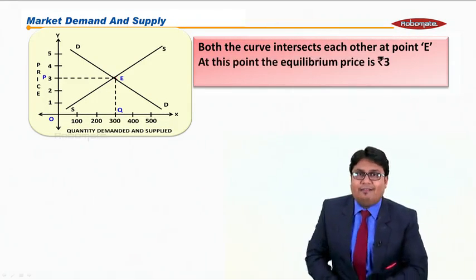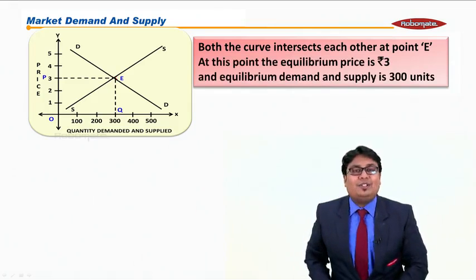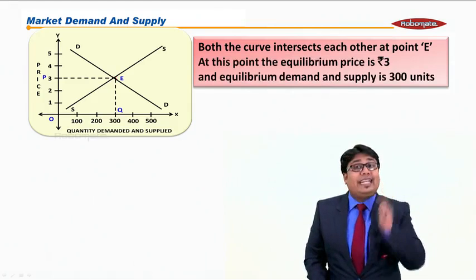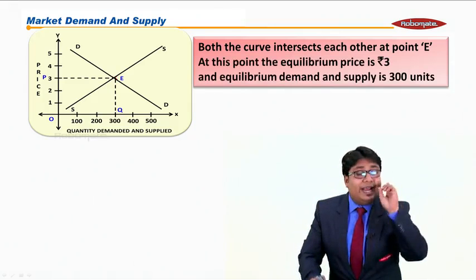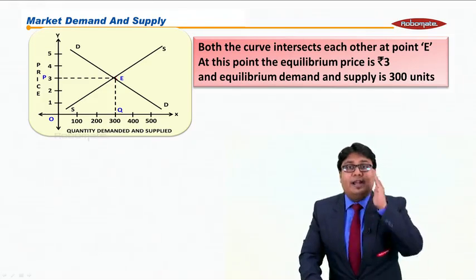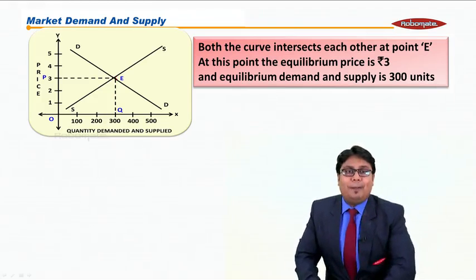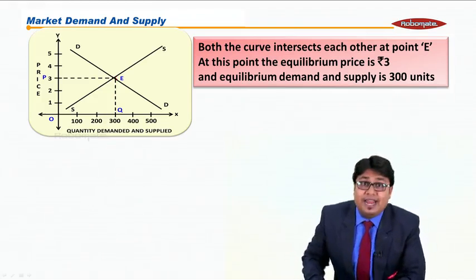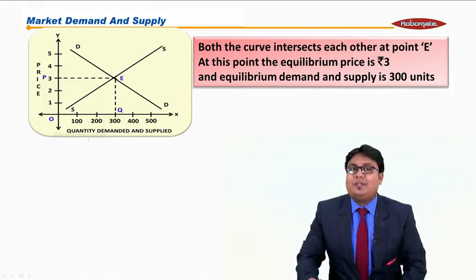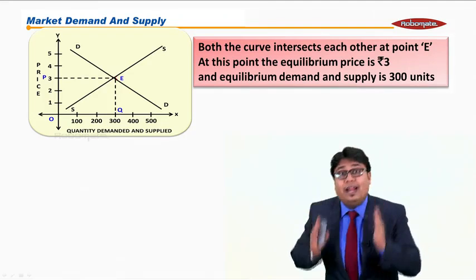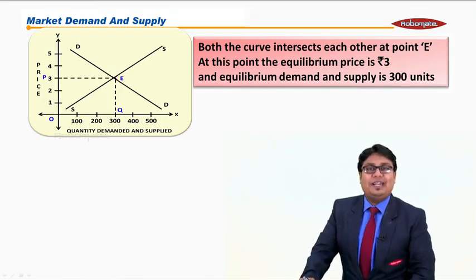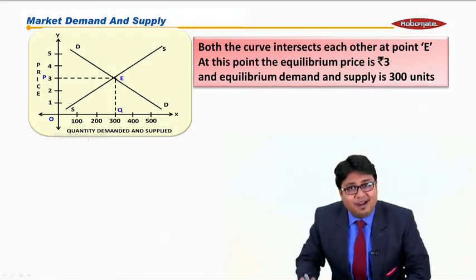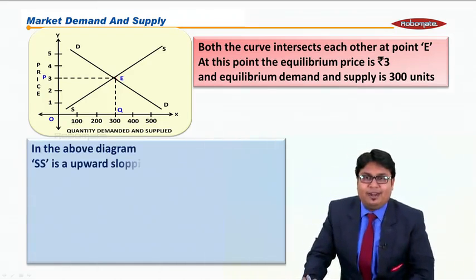So we have studied this particular diagram. Both the curves intersect each other at point E. If you remember, point E is my equilibrium point, and at this point the equilibrium price is rupees 3, where the quantity demanded and supply are equal, and they both are equal at 300 units.